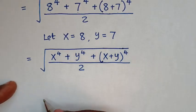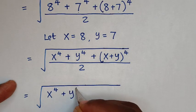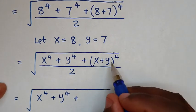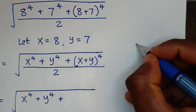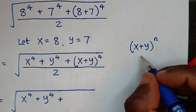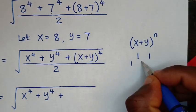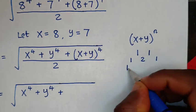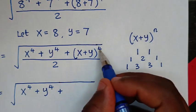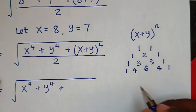We will expand (x plus y) to the power of 4 using the binomial theorem. The rule is (x plus y) to the power of n, where n equals 4. Using Pascal's triangle: when n is 1, coefficients are 1, 1. When n is 2, coefficients are 1, 2, 1. When n is 4, coefficients are 1, 4, 6, 4, 1. We will use these coefficients.